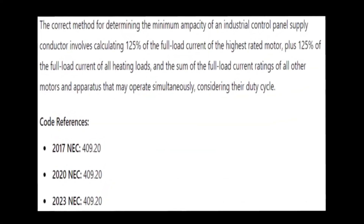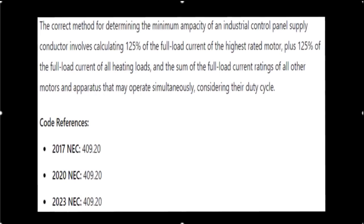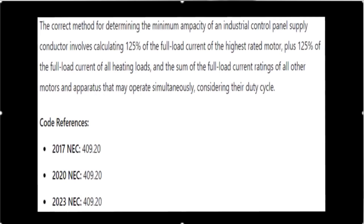The correct method for determining the minimum ampacity of an industrial control panel supply conductor involves calculating 125% of the full load current of the highest rated motor, plus 125% of the full load current of all heating loads, plus the sum of all full load current ratings of all other motors and apparatuses that may operate simultaneously. You can also consider duty cycle.